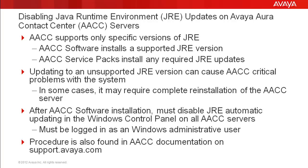In the field, updating JRE on an AACC server to an unsupported version can cause critical problems with the AACC system. In some cases, a complete reinstall of the AACC server was necessary to fix the problem. Therefore, after the AACC software is installed, JRE automatic updates should be disabled on every AACC Windows Server. This is done in the Windows Control Panel. You must be logged into the AACC server as a Windows Admin account to disable the JRE updates.